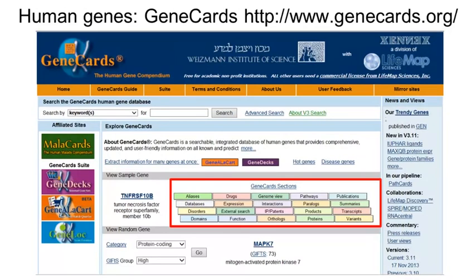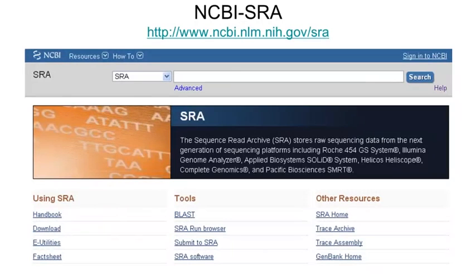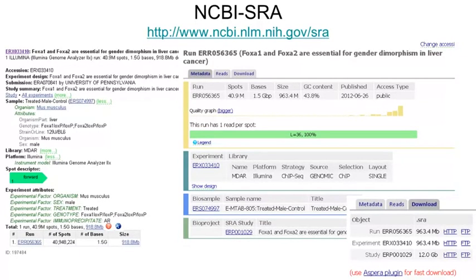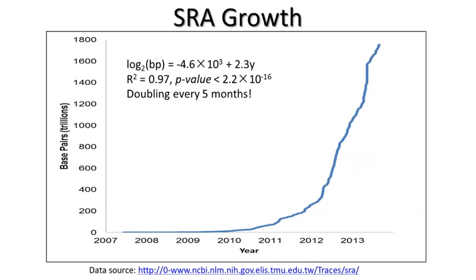Another important resource at NCBI is the Sequence Read Archive, or SRA, which we had touched upon in earlier lectures. SRA stores raw sequencing data from next-generation sequencing technologies. From SRA, you can download not only the raw read sequences, but also metadata about the experiment design, sample information, library, sequencing platform, and so on. As of the end of 2013, SRA contains 2.69 petabase pairs of data from over 323,000 samples in over 27,000 records. As this figure shows, the data has been increasing exponentially since SRA was created in 2007.